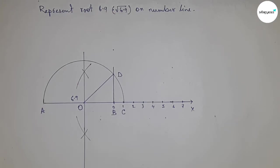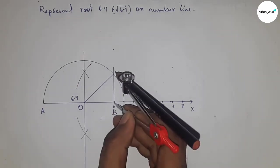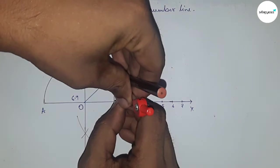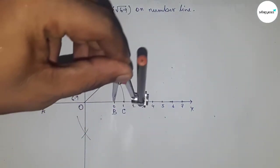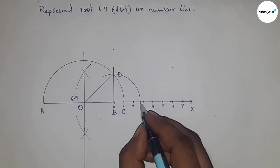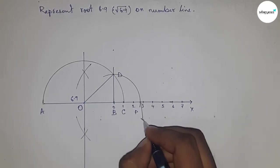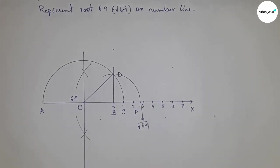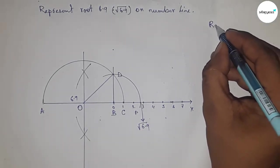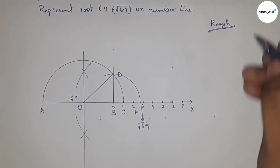Now take the length BD with compass to draw an arc which meets the number line at point P. This is the representation of root 6.9 on the number line. Now let's discuss the calculation.